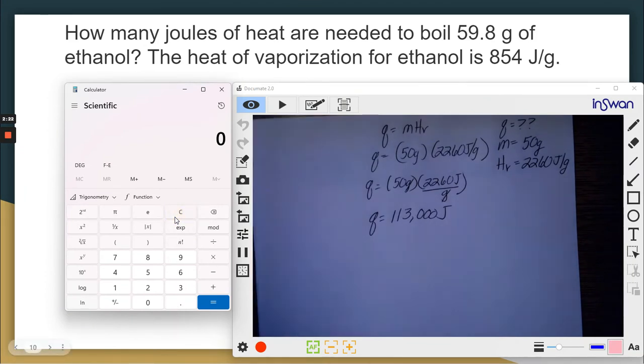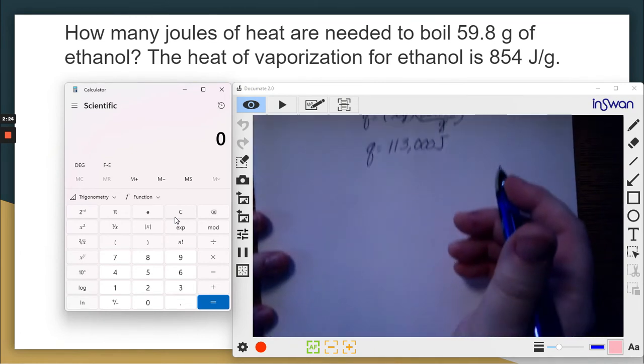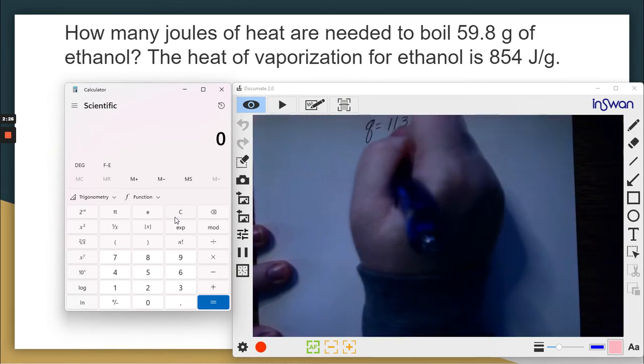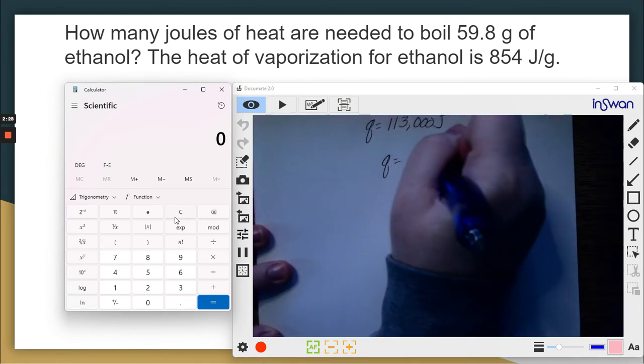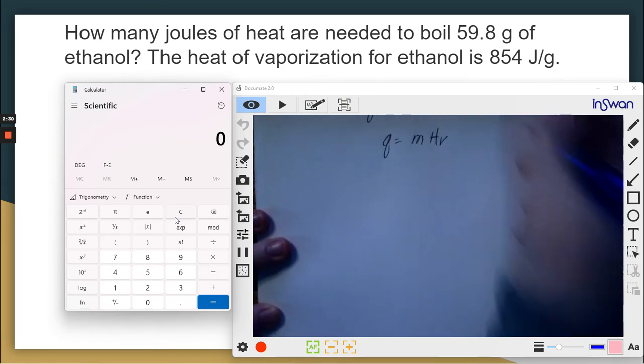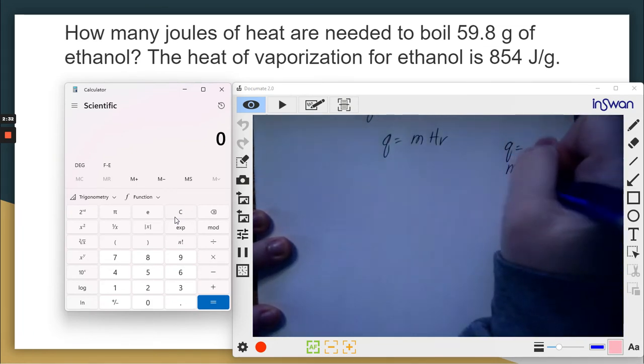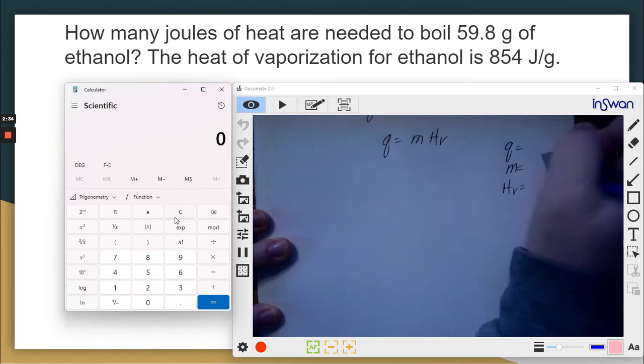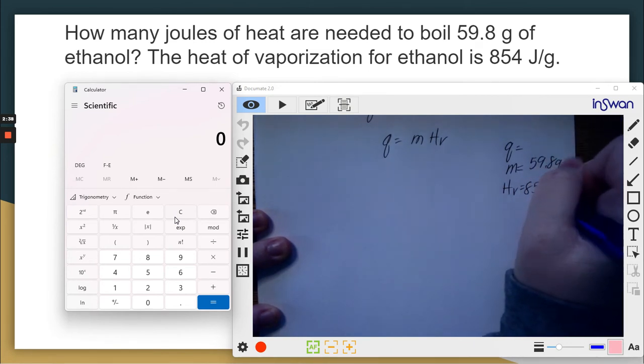So I'm going to be using the same formula. Q equals MHV. Okay. Write my list of variables. 59.8 grams, 854 joules per gram. Okay. Plug it in.